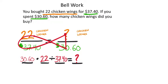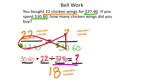When I push enter, it tells me how many chicken wings you can purchase for $30.60. It looks like 18 on my calculator. But the answer is not just 18 — it's 18 chicken wings, because this is a word problem. You need to make sure that you're labeling your answers.